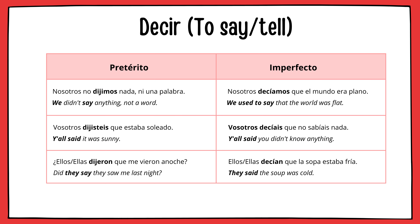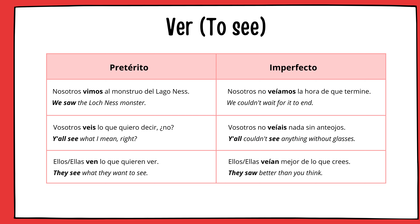Nosotros no dijimos nada, ni una palabra. Ellos dijeron que me vieron anoche. Nosotros decíamos que el mundo era plano. Vosotros decíais que no sabíais nada. Ellos decían que la sopa estaba fría. Next verb is ver, which means 'to see.' Yo vi la película el día del estreno. Tú viste la escena post créditos. Él lo vio con sus propios ojos. Yo veía dibujos animados cuando era chico. Tú veías la película de Disney. Él veía fantasmas en la casa de su abuela.